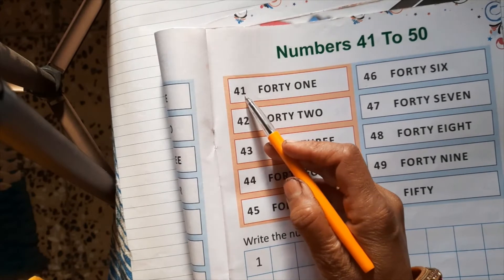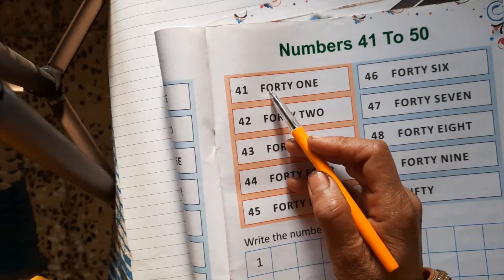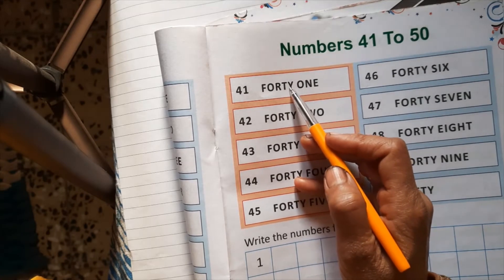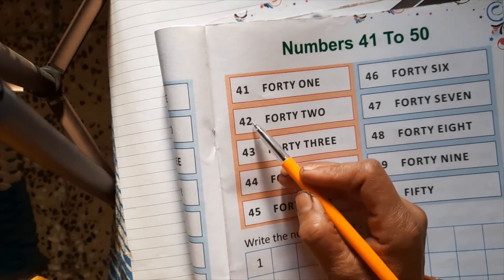41, 4-1, 41. 41 spelling is F-O-R-T-Y, 41, O-N-E, 1.